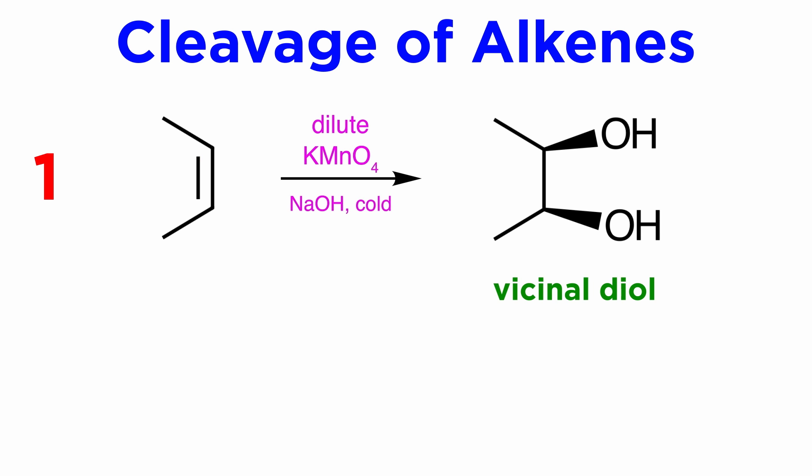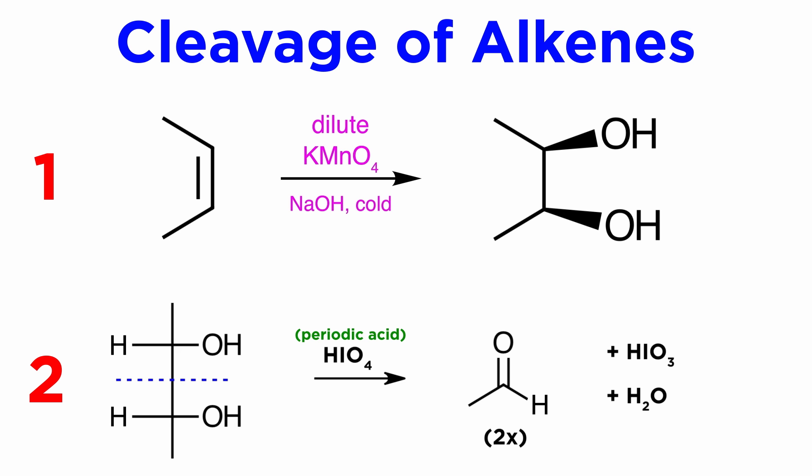A similar reaction can be performed by first enacting dihydroxylation to get a vicinal diol, followed by reaction with periodic acid, or HIO4. This will cleave the bond between the two carbons that bear the hydroxyls, by a rather interesting mechanism involving a cyclic periodate intermediate, and yielding either two smaller compounds if the starting material was linear, or a linear dicarbonyl compound if the starting material was cyclic.